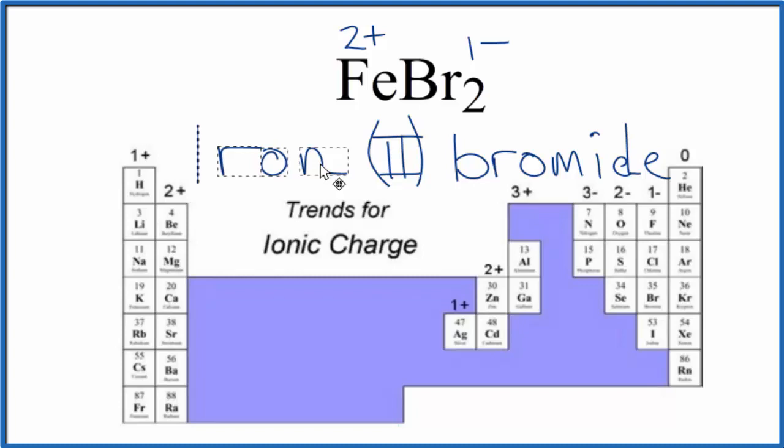So the name for FeBr2, that's iron two bromide. You might also hear this called ferrous bromide. That's an older name for FeBr2. But this is the official name, iron two bromide. And this is Dr. B. Thanks for watching.